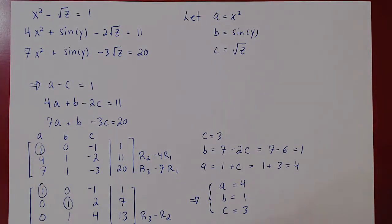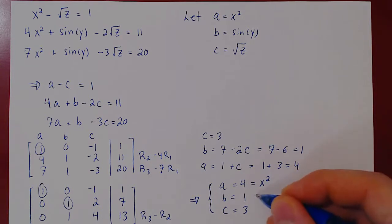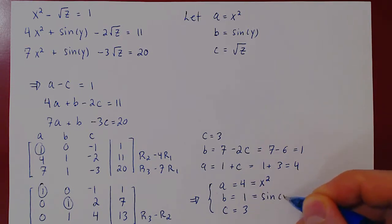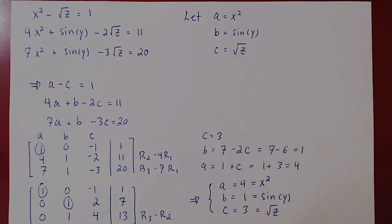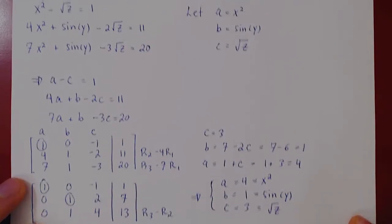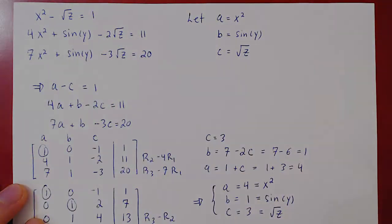OK, well, a was x squared, b was sine of y, and c was root of z. And let's now see if we can solve for x, y, and z, and find all solutions to the original non-linear system.